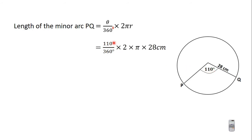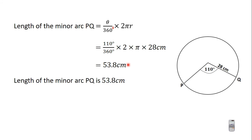So this is going to give us 110 degrees divided by 360 degrees, times 2 times π times 28 centimeters. When you do this on your calculator you are going to have 53.8 centimeters. So the length of the minor arc is 53.8 centimeters.